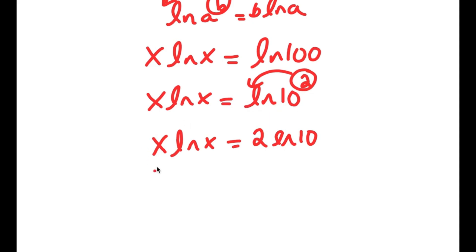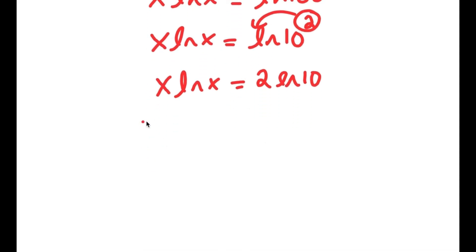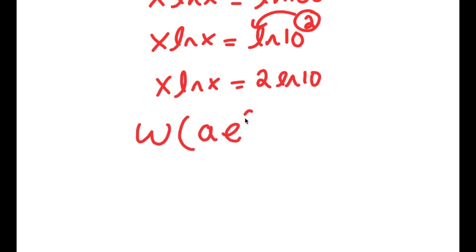There is something called the Lambert W function. If I apply it to something in the form a times e to the power of a, the result is a. So the Lambert W function essentially inverts expressions of the form a times e to the power of a.